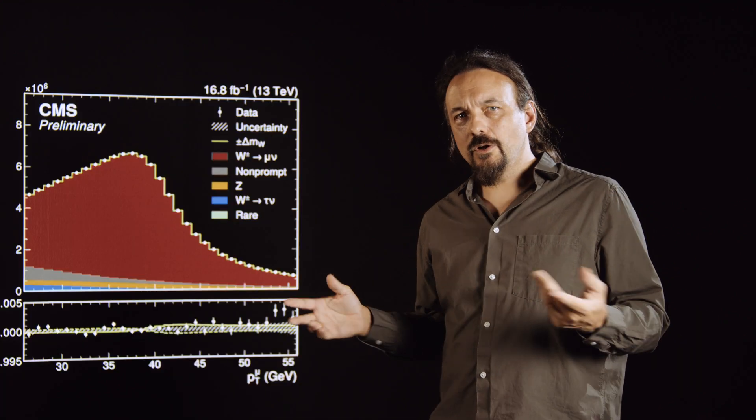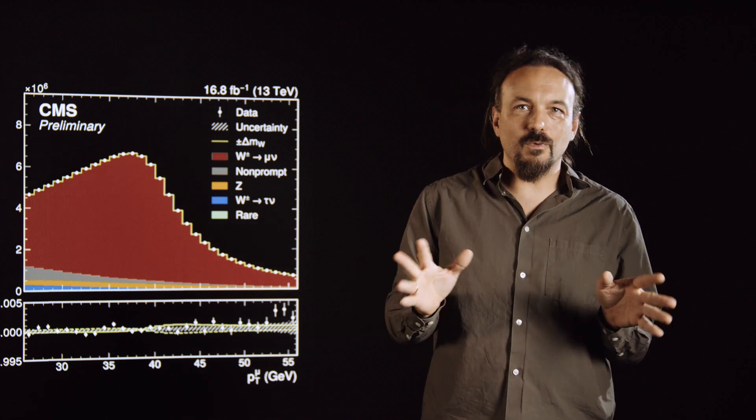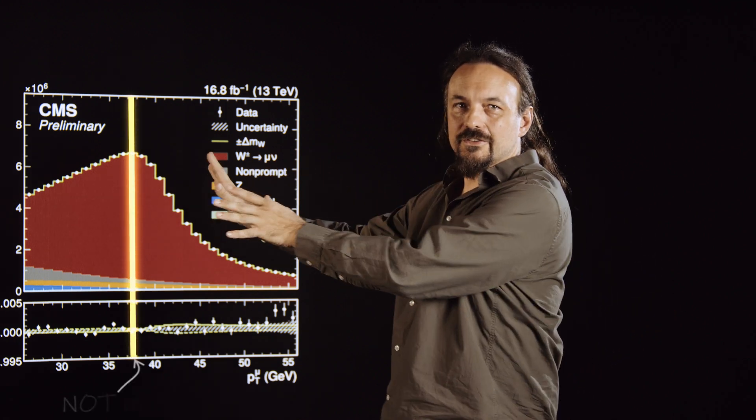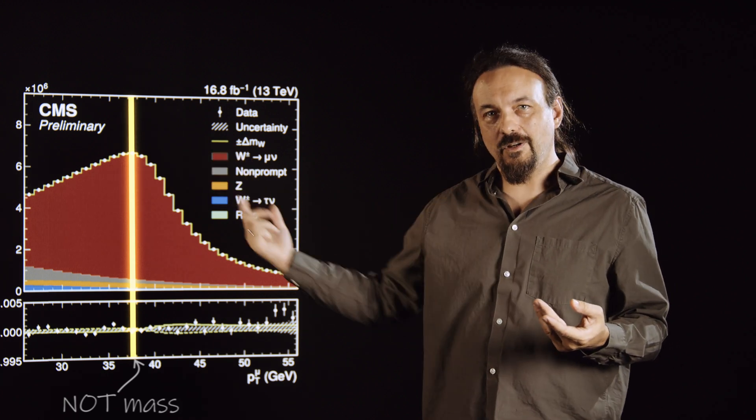Now for the W, we only have one muon. So you cannot make an invariant mass plot from just this one muon. So what if we just try to simply plot the momentum of this muon? So you're also going to see some peak-like structure, but interpreting that in terms of mass is much more complex. The position of this structure will change with mass, but you cannot simply read the mass off the plot.